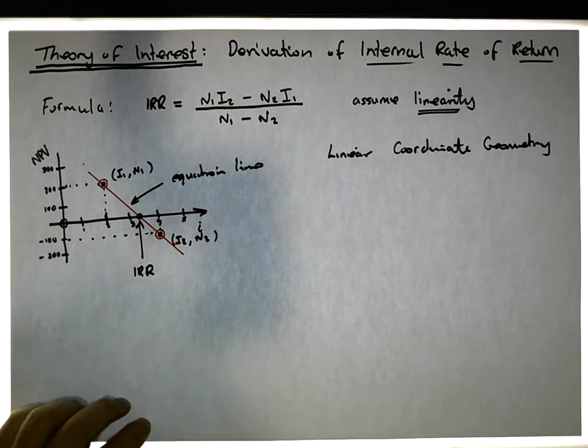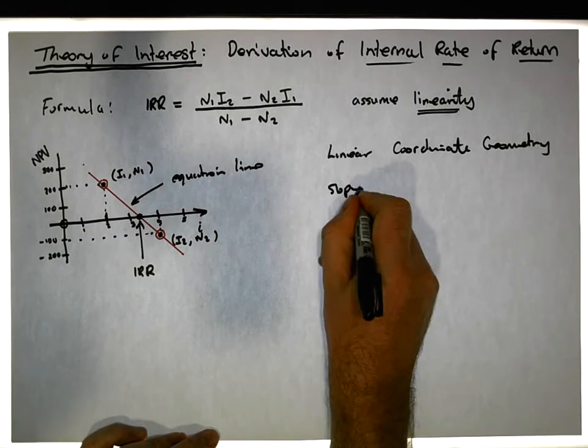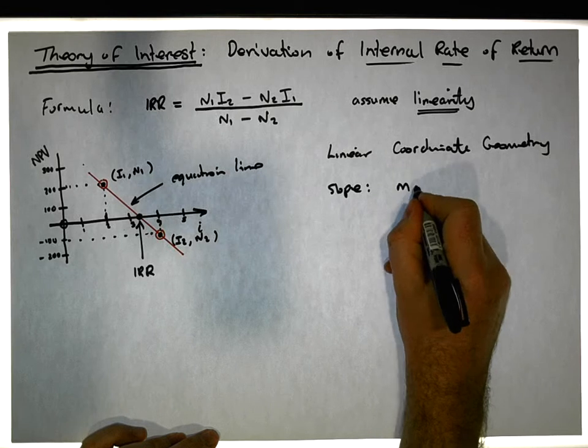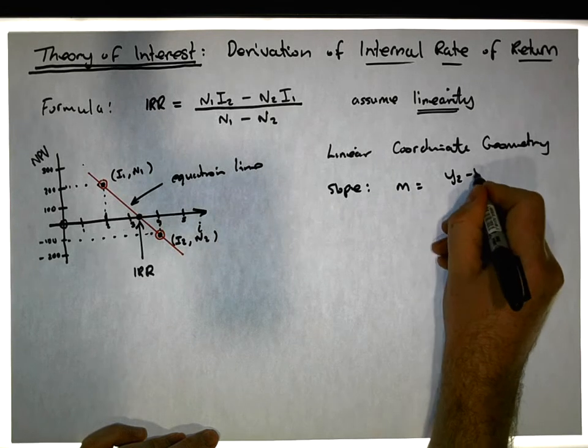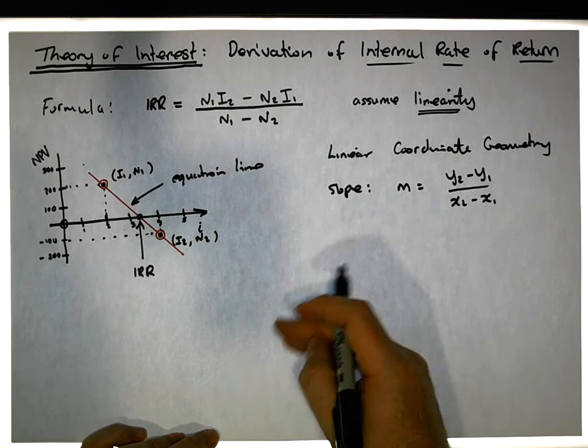And what we need is the slope of the line. The slope given two points, let's say m is equal to y2 minus y1 over x2 minus x1.